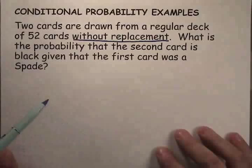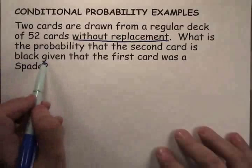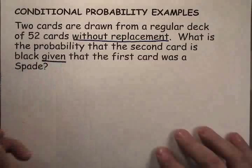What is the probability that the second card is black, given that the first card was a spade? So we're doing a conditional probability problem.